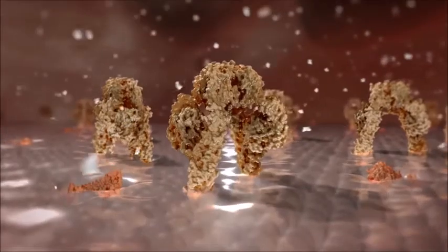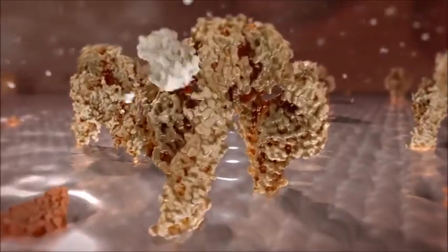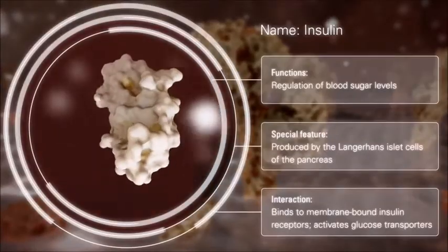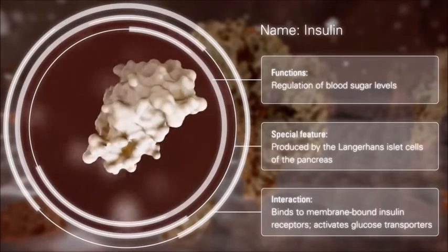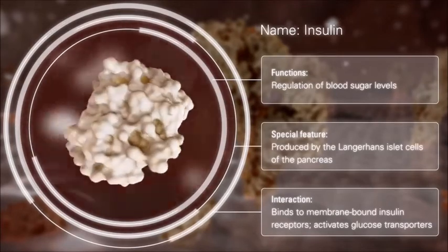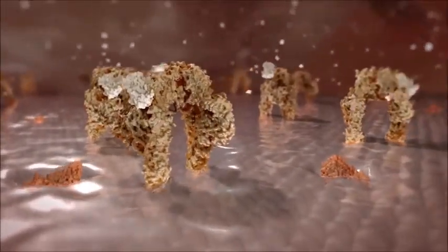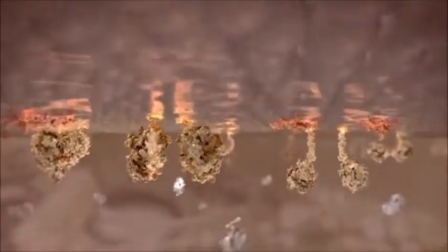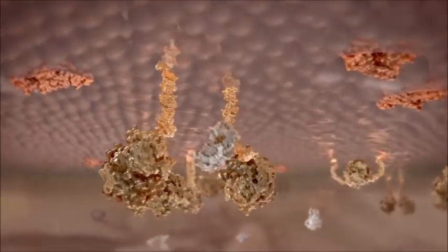Normally, insulin receptors bind to the hormone insulin when it appears in the blood. The binding of insulin to these receptors allows the sugar to be transported into the cells.